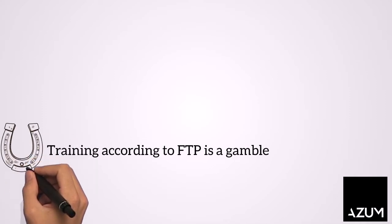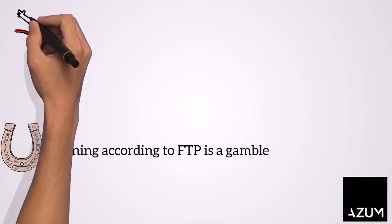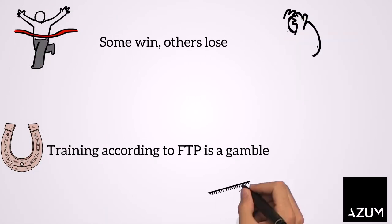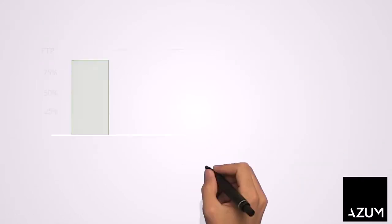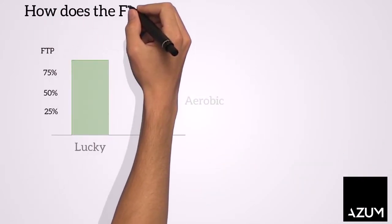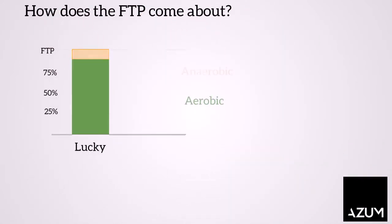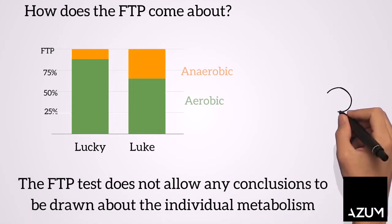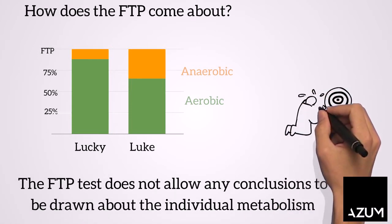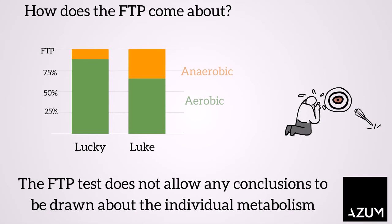Training according to FTP is a gamble — some win, others lose. But how come? The energy supply consists of an aerobic and an anaerobic part. The ratio between aerobic and anaerobic part varies from athlete to athlete. The value determined from the FTP test does not allow any conclusions about the individual metabolism to be drawn.